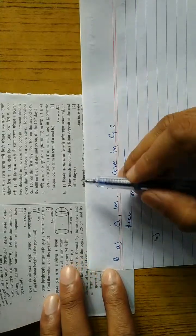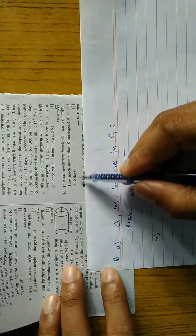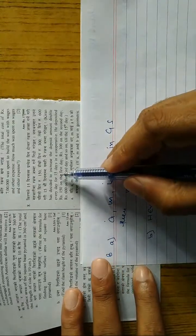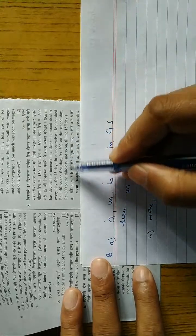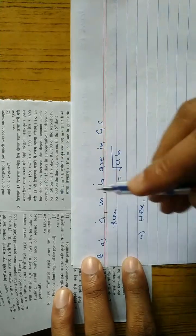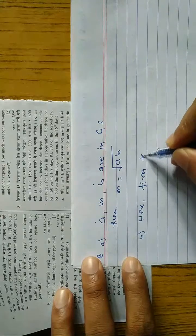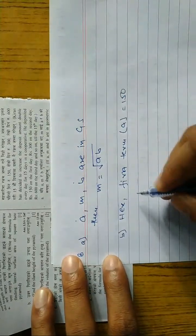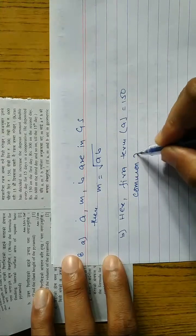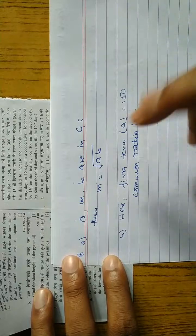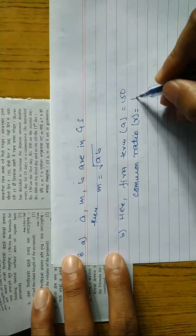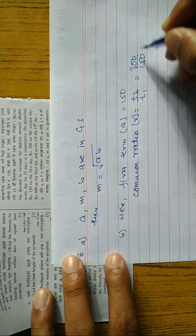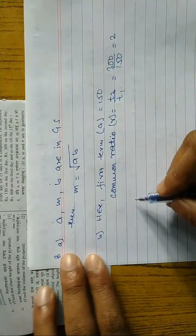Part B: how much amount does Kiran deposit at the end of 15 days? First term a = 150. Common ratio r = t2/t1 = 300/150 = 2. Number of terms n = 15 days, so n = 15.